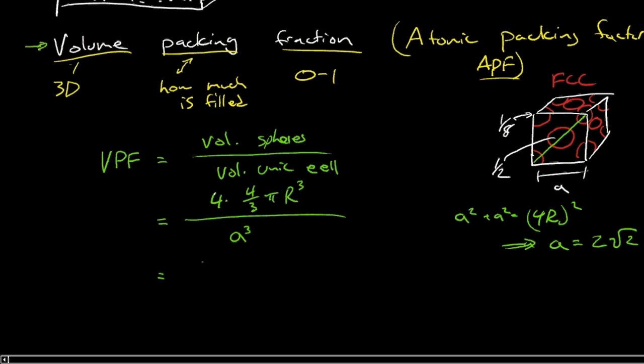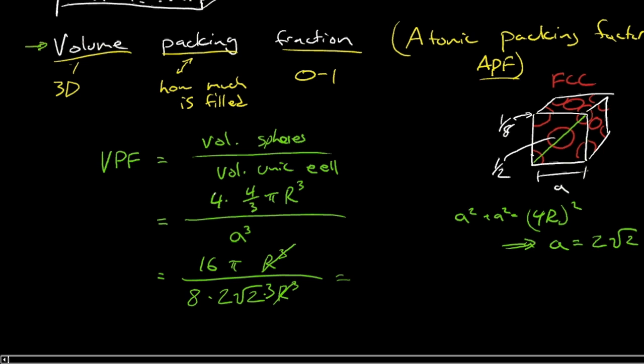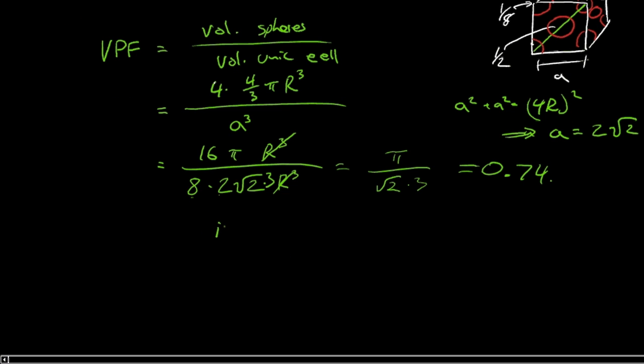So we can actually substitute that into our denominator. We've got 16 pi r cubed over 2 root 2 cubed. So that's going to be 8 times 2 root 2r cubed. Whoops, I missed a 3 in the denominator there. So we can see at this point, in fact, that the radii cancel. And the numbers work out quite nicely here. We've got pi over root 2 times 3, which is 0.74, which is independent of radius.